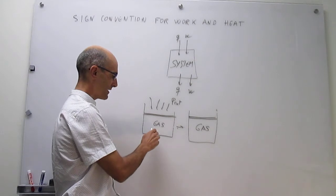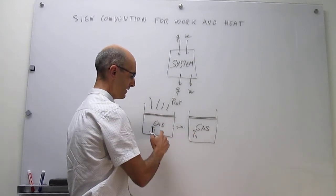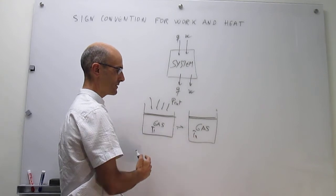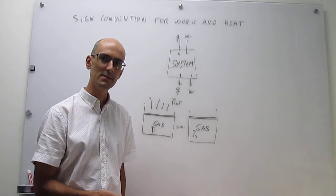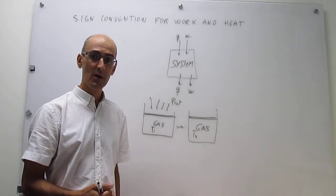But for some reason, maybe your initial temperature T1 is higher than T2. So there is a loss of energy as heat to the surroundings. That's an exothermic process, that would be a negative heat.